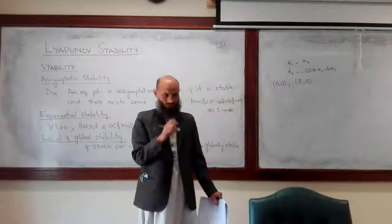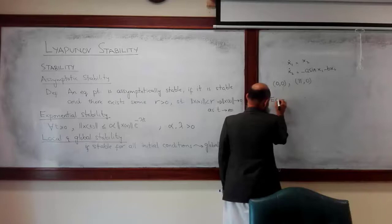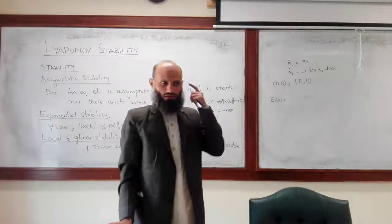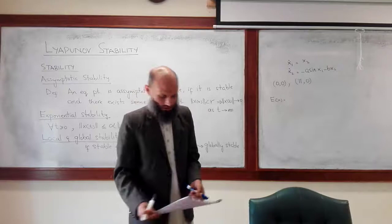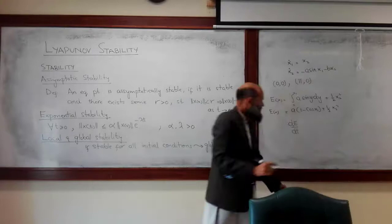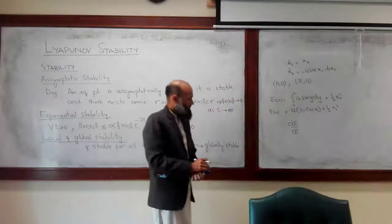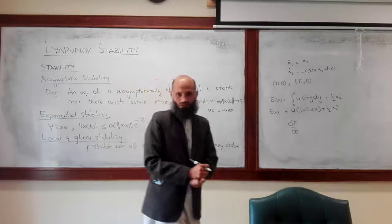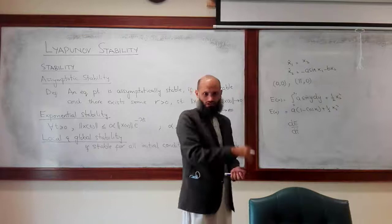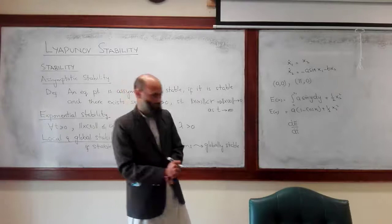The total energy E of x of this pendulum is the sum of potential energy and kinetic energy. If there is no friction, then what will be the rate of change of energy? The pendulum is oscillating with no friction, so the rate of change of energy will be zero — zero along the trajectories.